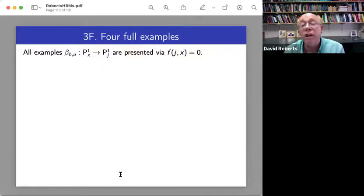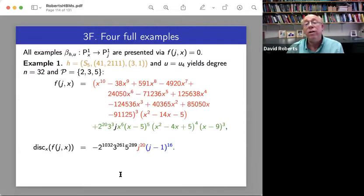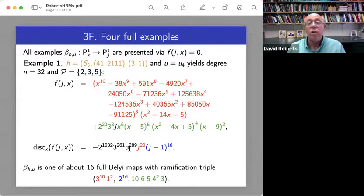So I'm going to put them in a uniform context presented by a bivariate equation relating J and X. So J is the coordinate on the base. So like here's one. So this is my Hurwitz parameter. And this is a Belyi pencil from the previous slide.